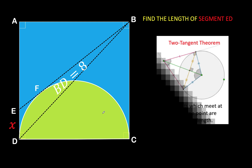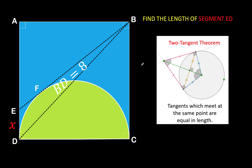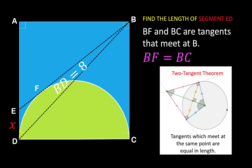From the two tangent theorem, notice that segment BF and segment BC are both tangents to the yellow semicircle and they meet at a common point B that is external to the semicircle. So from the two tangent theorem, these two line segments are equal in length.